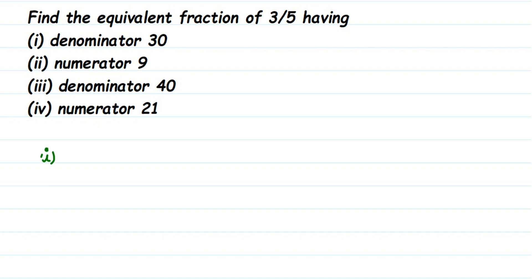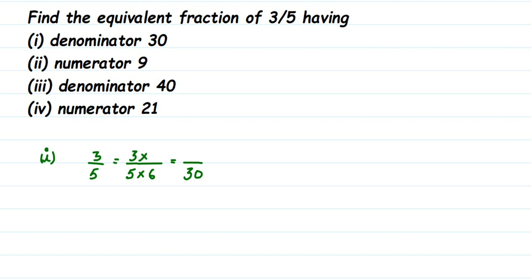The number given is 3/5, and we need to find the equivalent fraction of 3/5 where the denominator should be equal to 30. Here, if I divide 5 by some number I will not get 30, so I should multiply. With 5, what should I multiply to get 30? Since 5 × 6 = 30, we multiply by 6. The same number must be multiplied in the numerator.